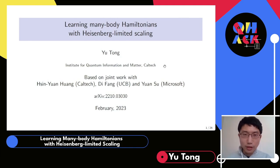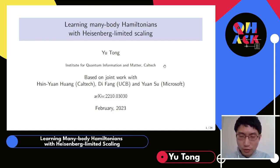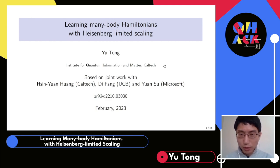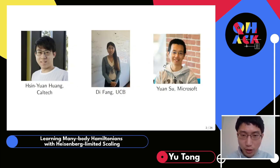Thank you for the introduction, and I also want to thank the organizers of QHack for making this event happen. In this talk I will introduce a new algorithm for learning about Hamiltonians with Heisenberg-limited scaling. This is based on joint work with Xinyuan Fong of Caltech, a collaborator from UC Berkeley, and Yuan Su of Microsoft.